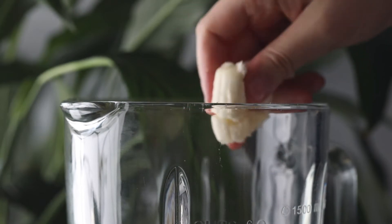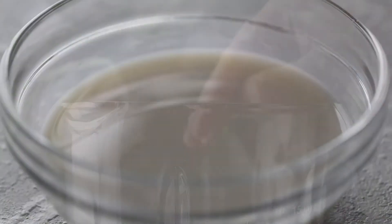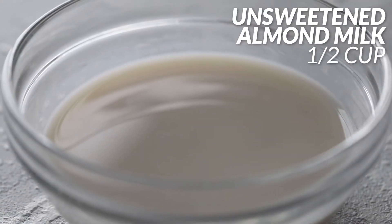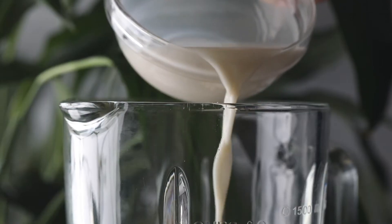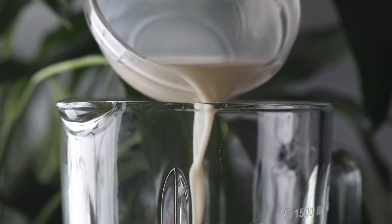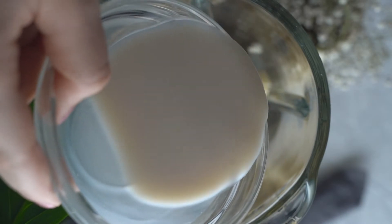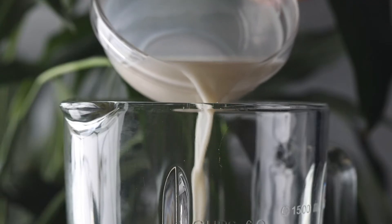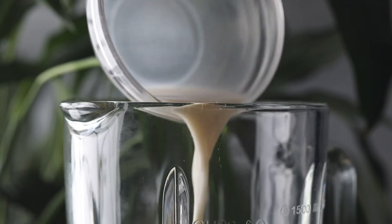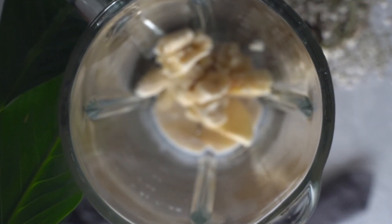I'm using half a cup of unsweetened almond milk—make sure it is unsweetened. It has 20 calories per half cup and has healthy fat and calcium, which we love. You can use other plant-based milks; it doesn't really matter, whatever you enjoy.